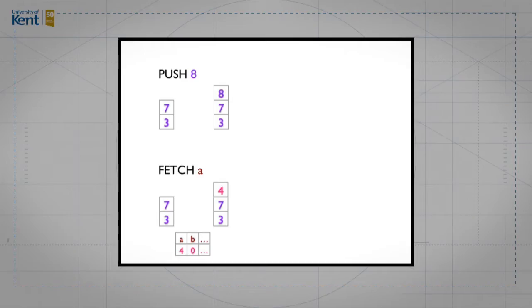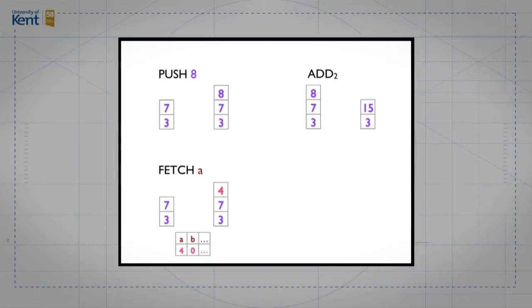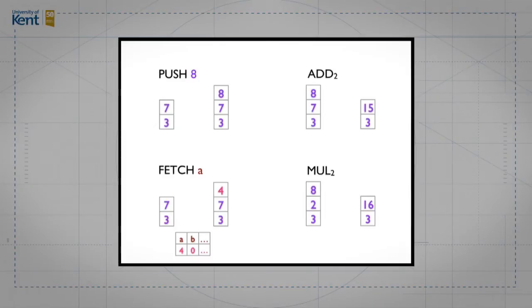We have two operations for performing arithmetic. Add takes the top two elements of the stack, pops them, adds them together, and pushes the result. You can see that eight and seven on top are popped, added to give 15, and pushed back. Similarly, multiplication pops the top two values and replaces them with their product — for example, eight and two become 16. Those are the four instructions on our virtual machine.